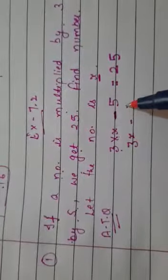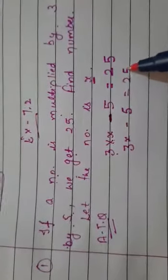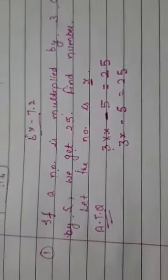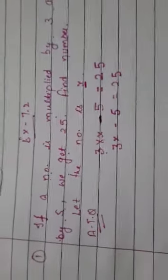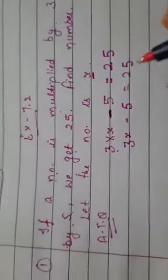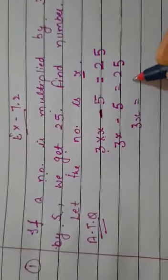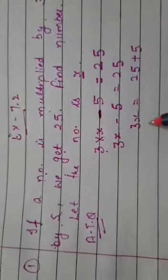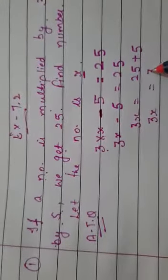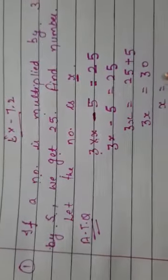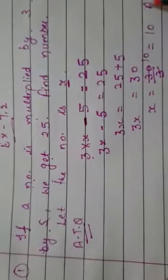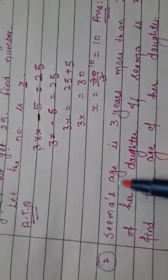So the equation is 3x minus 5 is equal to 25. Using the transposition method, 5 goes to the other side and becomes positive: 3x = 30, so x = 30 ÷ 3 = 10. The answer is x = 10.